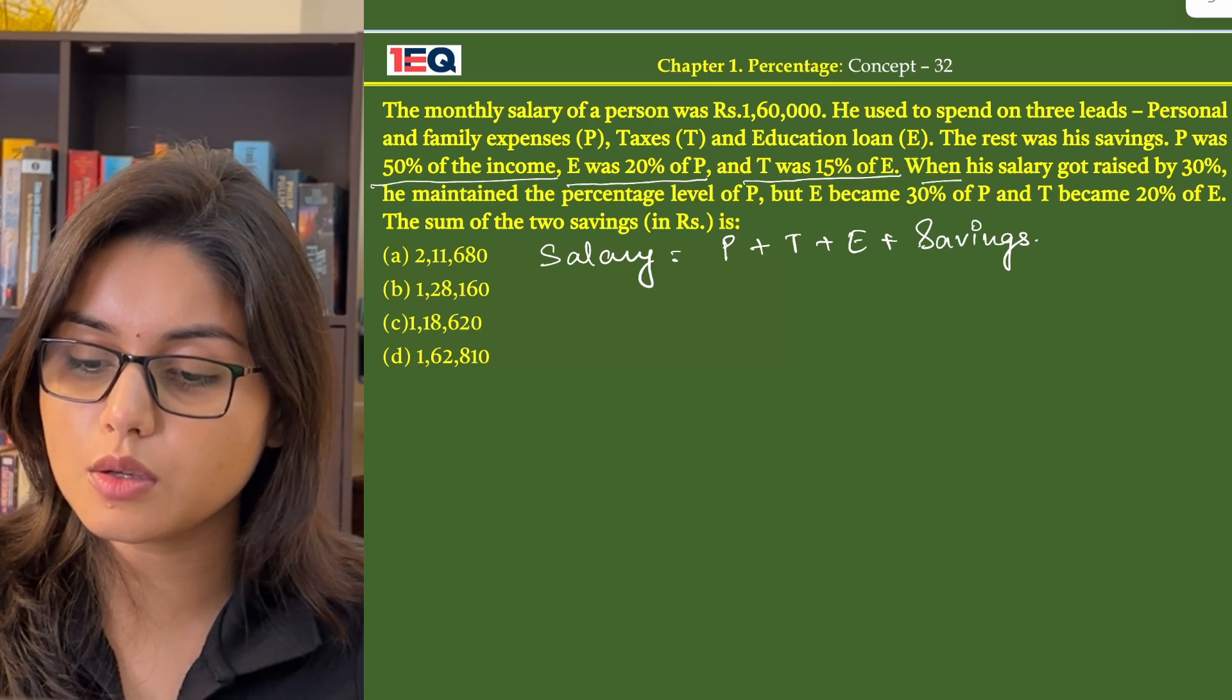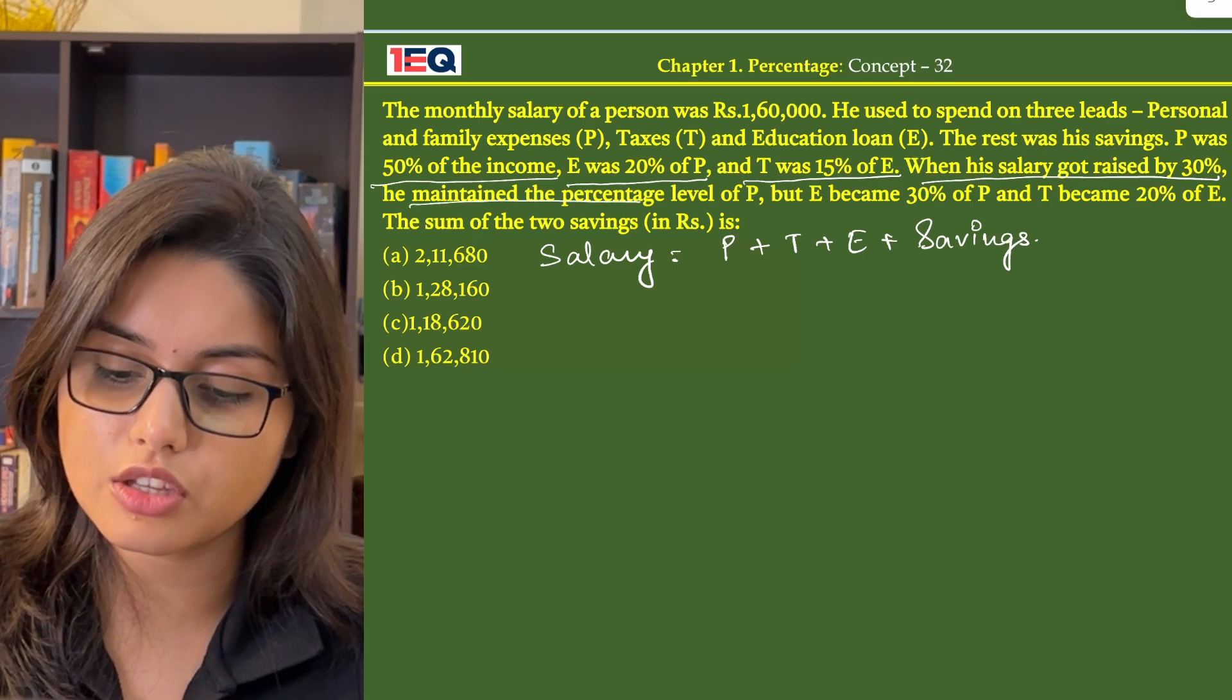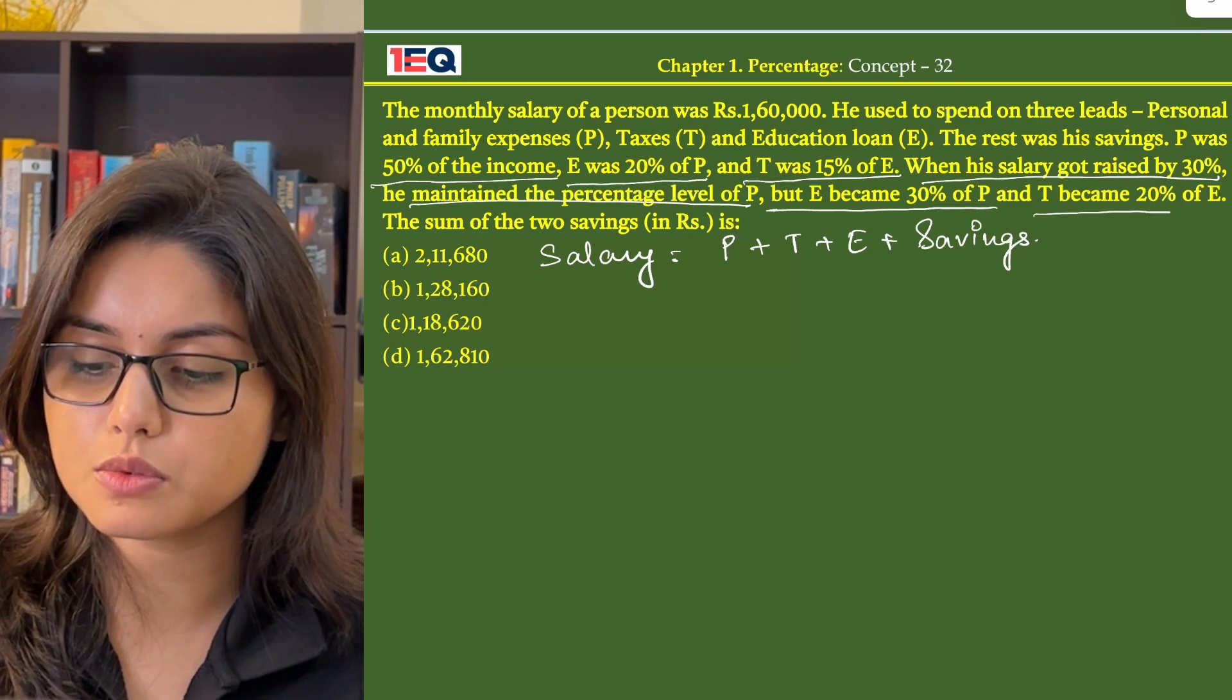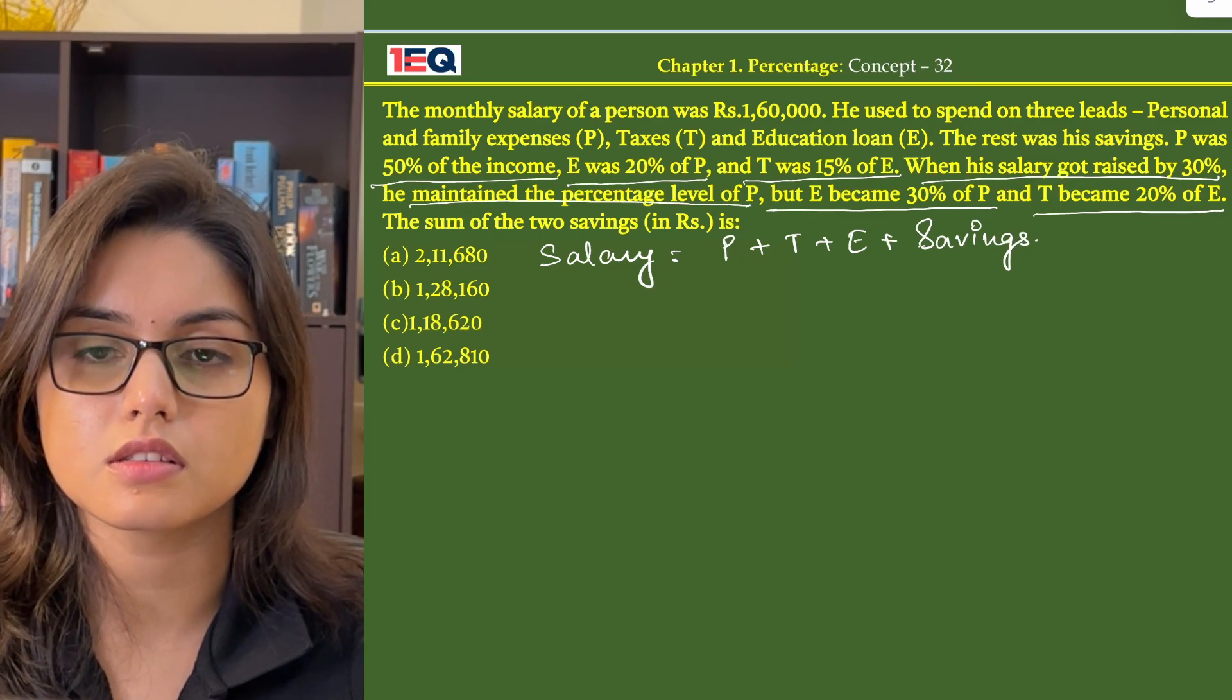When his salary got raised by 30%, he maintained the percentage level of P but E became 30% of P and T became 20% of E. The sum of the two savings in rupees is.